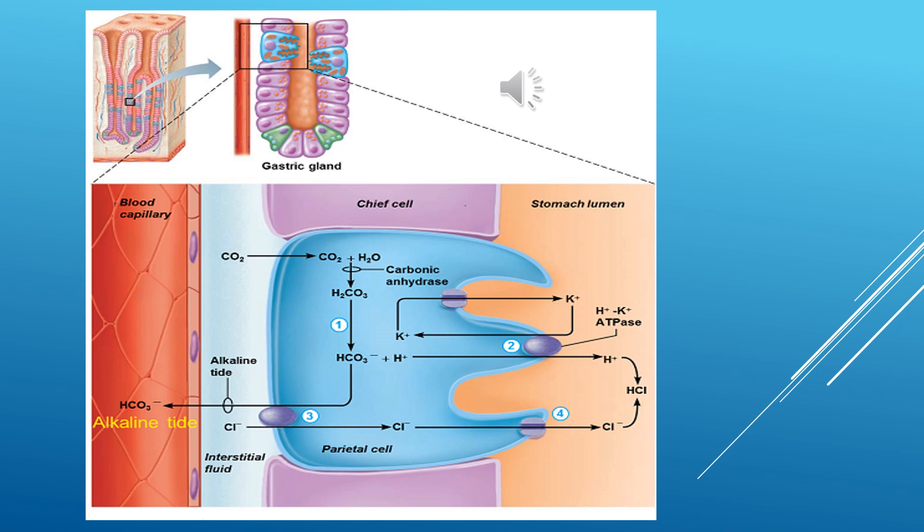Water and carbon dioxide combine within the cytoplasm of parietal cells to produce carbonic acid (H2CO3), which is catalyzed by carbonic anhydrase into hydrogen ion and bicarbonate ion: H2O + CO2 → H2CO3 → H⁺ + HCO3⁻.